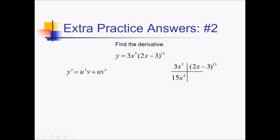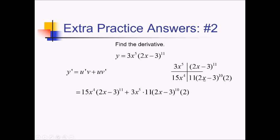For this next one, I need to use the chain rule. So I have 11 times something — 2x minus 3 — to the 10th power, times the derivative of 2x minus 3, which is 2. Multiplying it all out, I've got 15x to the 4th times 2x minus 3 to the 11th, plus 3x to the 5th times all this stuff down here. And we didn't have to simplify, so this is it.